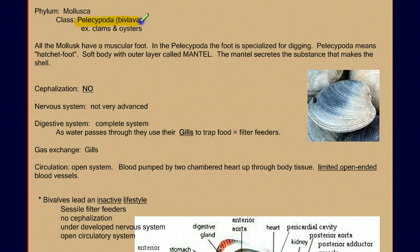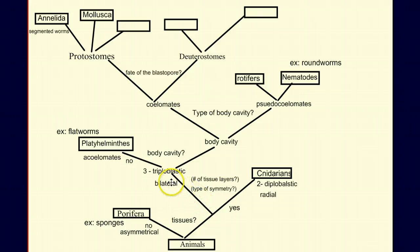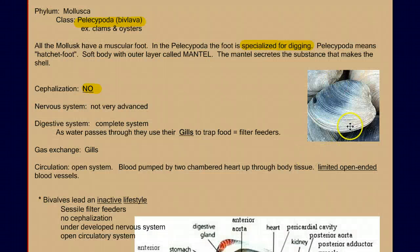Now let's move on to the pelecypods, or the bivalves — for example, clams and oysters. In some ways this seems like a backward step: the muscular foot is specialized for digging, they produce a hard shell, but they're not cephalized — they lack a head. If we look back, we've had a head for a long time; as soon as animals became bilateral, flatworms have a head, roundworms have a head, annelids have a head. But here we have a clam that is bilateral yet lacks a head. So there seem to be two requirements for having a head: one is being bilateral so there's a logical front and back. What's the second reason? Stop the video and think about it — what does a clam not do that all the other cephalized animals do?